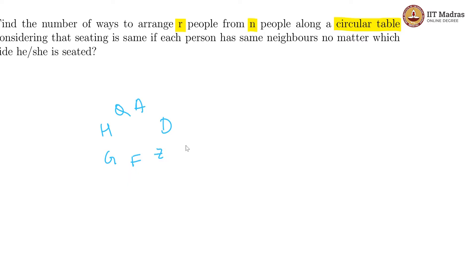According to what they are saying, as long as the person has same neighbors, so if I flip this instead of clockwise to anti-clockwise, suppose I have A and this side that is D, there is Z and then F and G and H and Q. So, now A has the same neighbors D and Q.